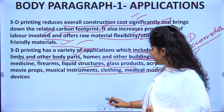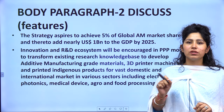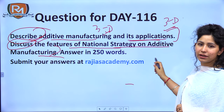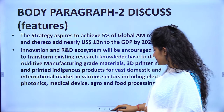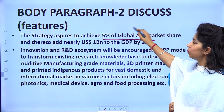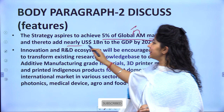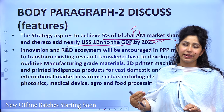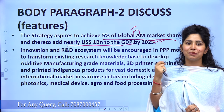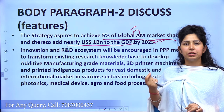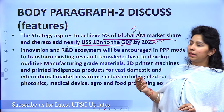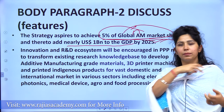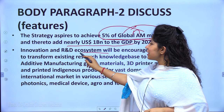In body paragraph 2, we discuss the features of the National Strategy on Additive Manufacturing. The strategy aspires to achieve 5% of the global additive manufacturing market share and add nearly US $1 billion to the GDP by 2025. In other words, India wants to own 5% of the global 3D printing market share — that is the vision of this national strategy.